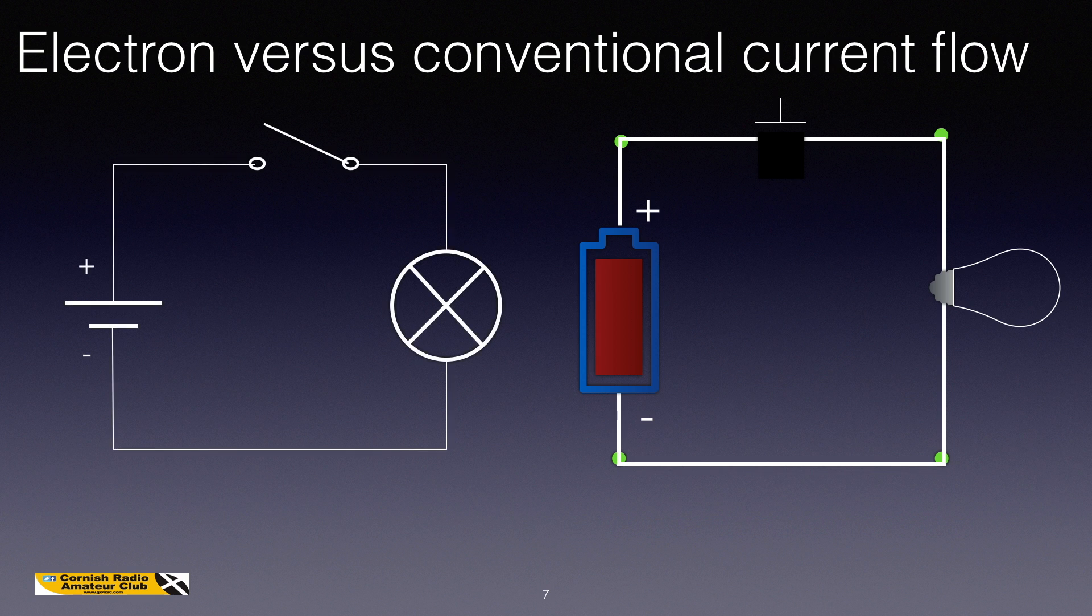If we draw a circuit instead of a picture, using the symbols that we've already learnt in a previous video, these symbols we need to know for the foundation examination, we have a cell. Remember, the longer bar on the cell is the positive. If the switch is closed, then the electron flow would be from negative to positive, and the conventional current we consider going from positive to negative. In the background series of videos, there is a video about current flowing if you want more details.